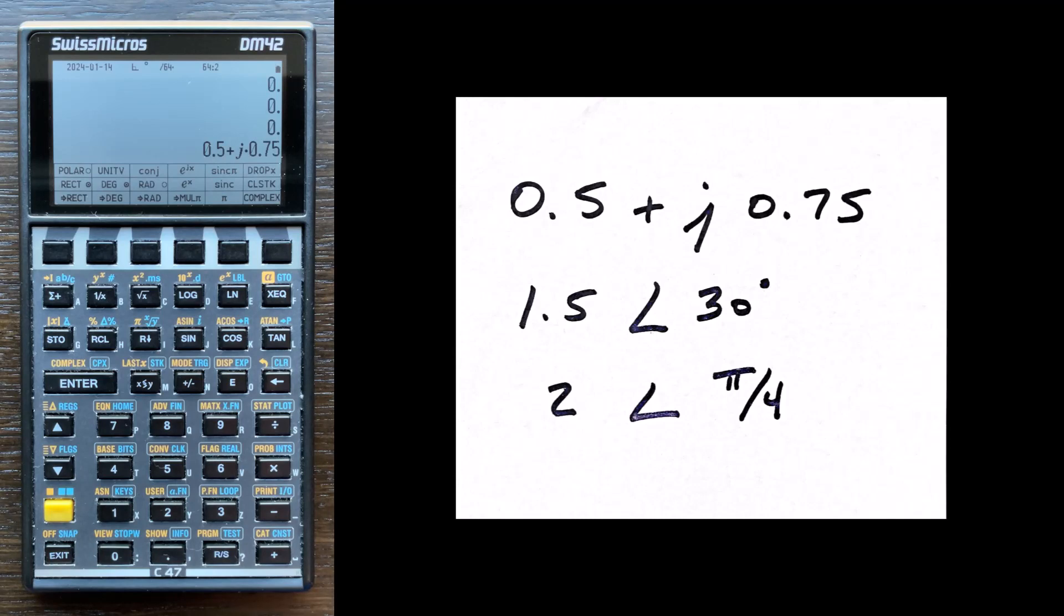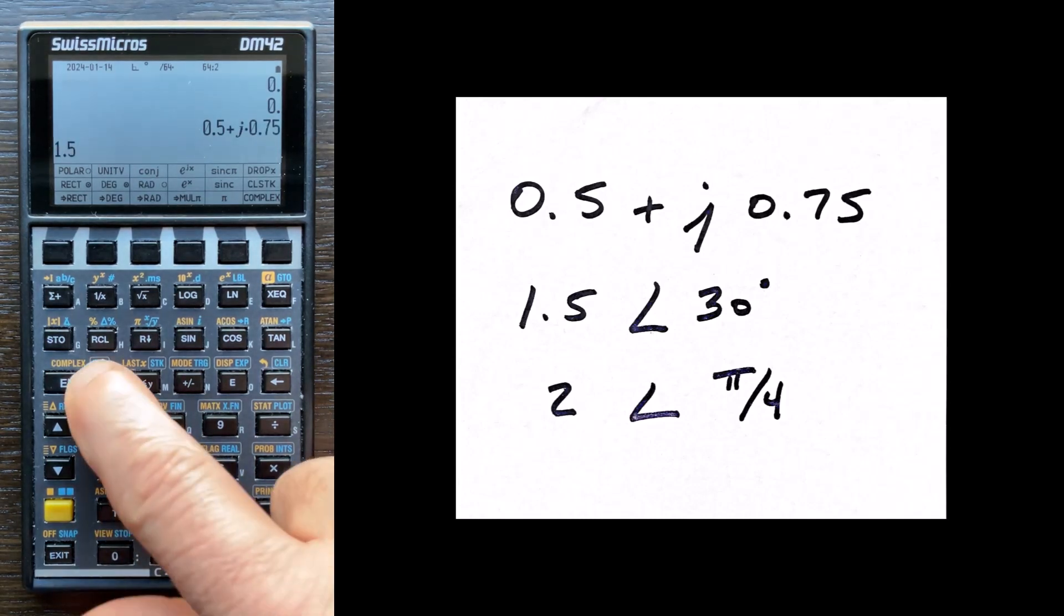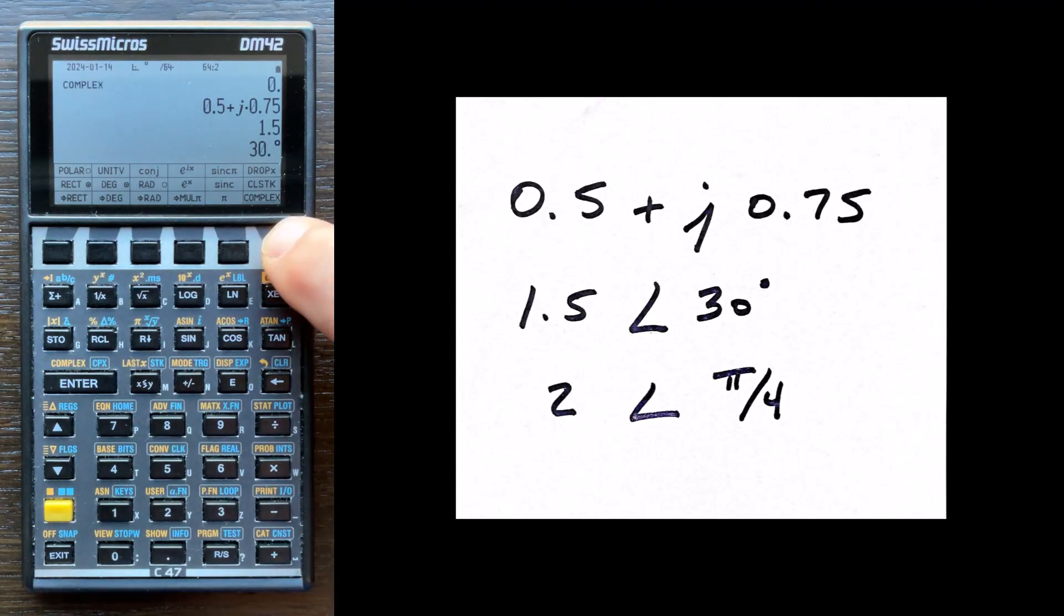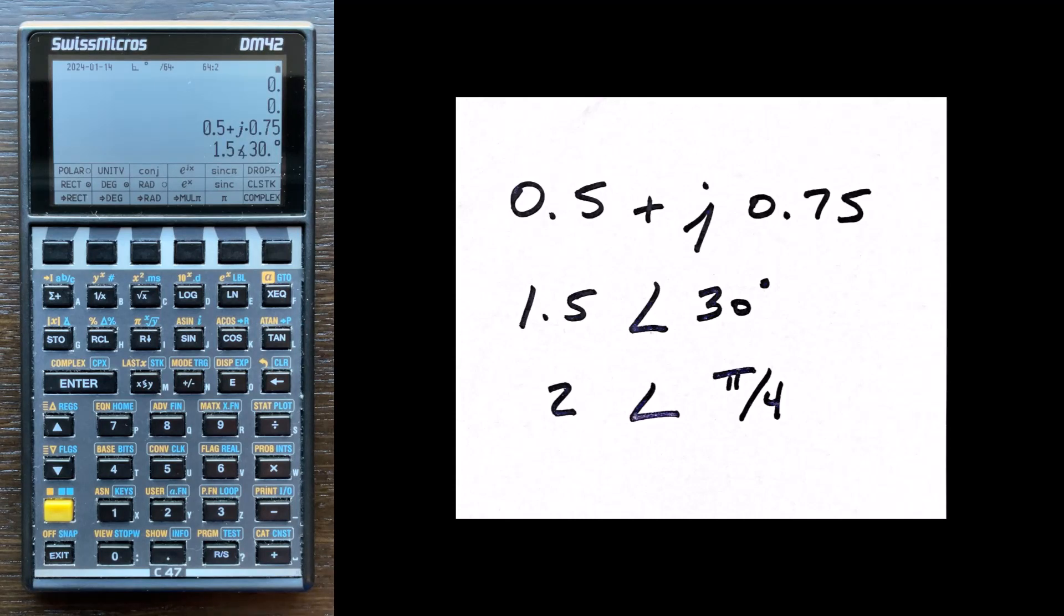Now the second number is in polar coordinates. It's got a magnitude of 1.5, and then an angle of 30 degrees. So we enter 30, but now we have to tell the calculator that this is 30 degrees, not the imaginary number. The F2 key will tag this number with degrees. And when I press complex, it assembles this into a complex number with magnitude and phase in degrees.